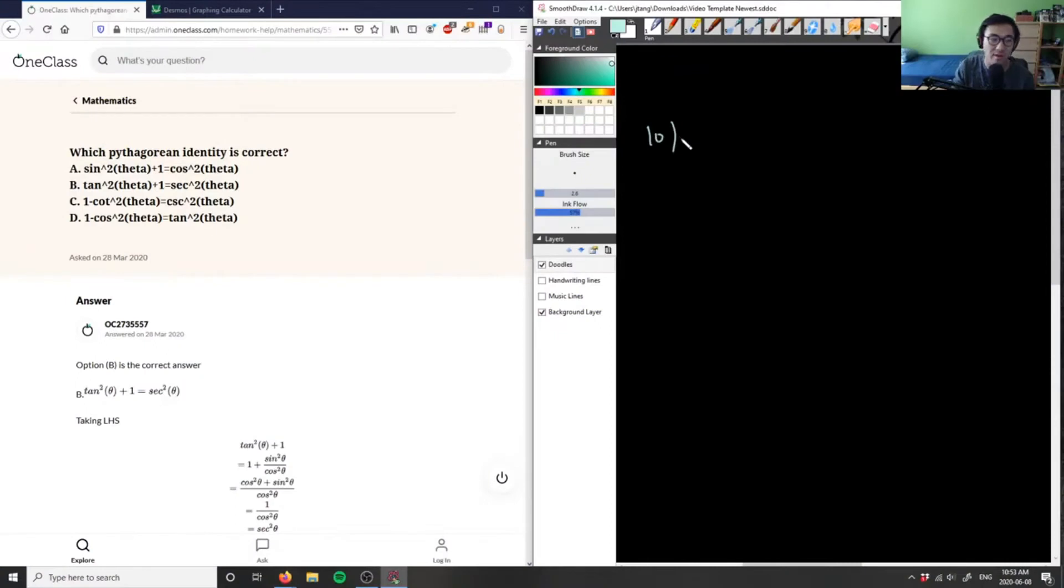We're asked which Pythagorean identity is correct. I'm given a list of all these Pythagorean identities here. Let me prove some of these. As you see, it says option B here is the correct answer. Let's verify that.